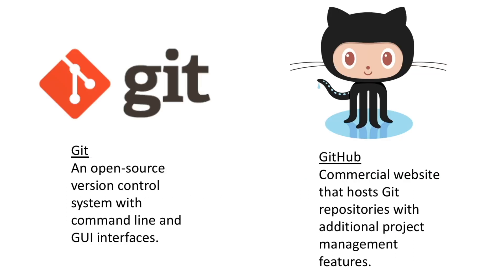So what is github.com? GitHub has two parts. There's an underlying open source version control system called Git that has both command line and GUI interfaces, and then GitHub is a layer on top of that — a commercial website that offers a number of additional project management features.